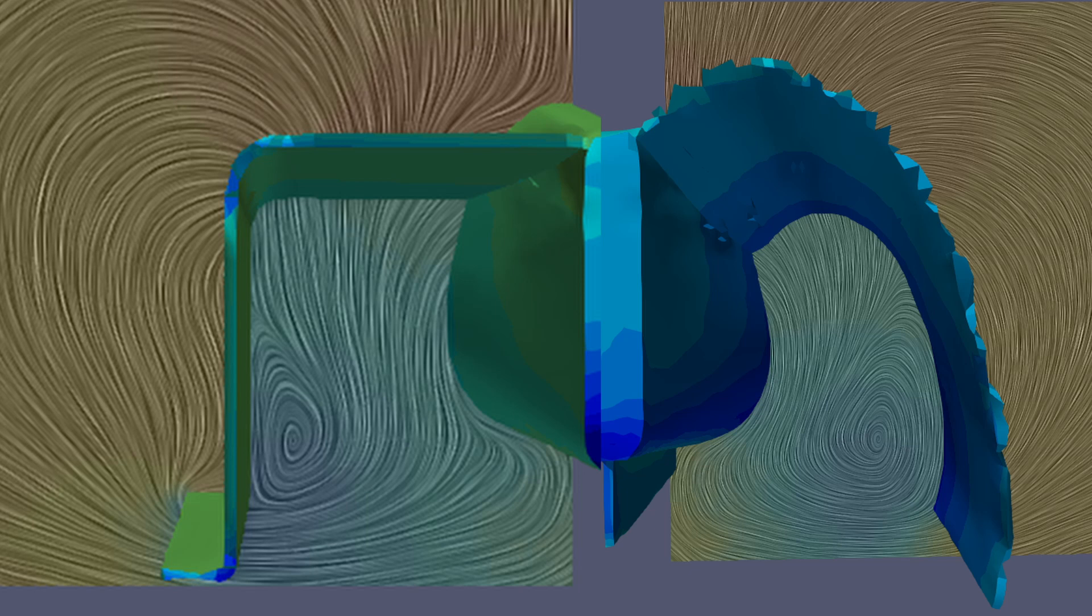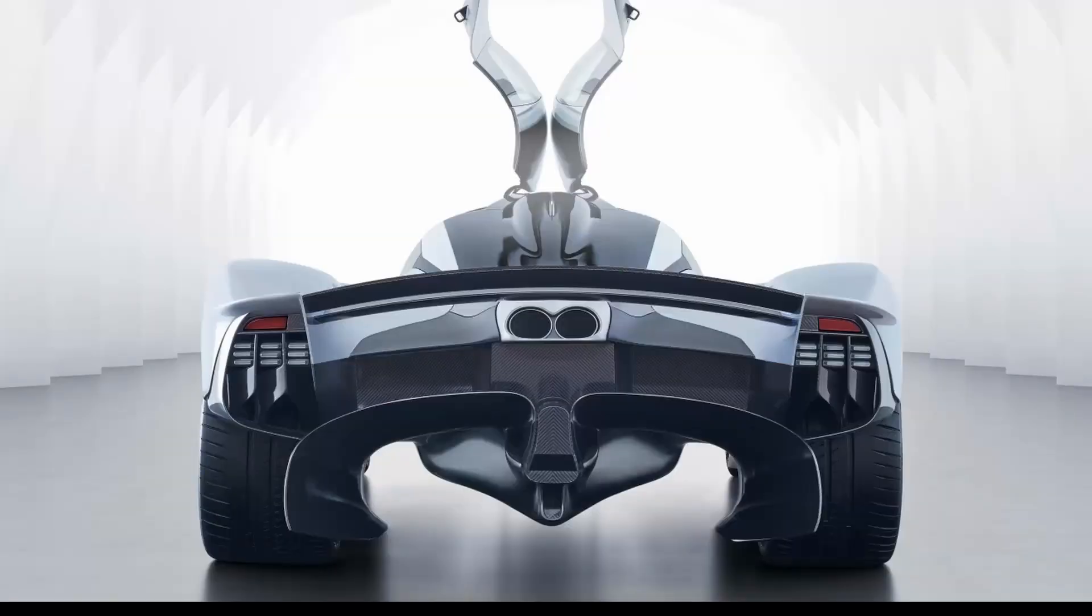Also, if you have a deep enough Venturi tunnel, a la something like the Aston Martin Valkyrie, you can actually spin up the vortices faster with the high-pressure air that is trying to mix with the low-pressure air as it comes into the diffuser. This is really just a function of the shape of the diffuser itself and having extremely deep diffuser tunnels.